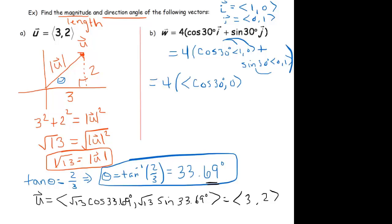And I can distribute the sine of 30 to the 0 and the 1. Sine of 30 times 0 is 0, and then sine of 30 times 1 is sine of 30.